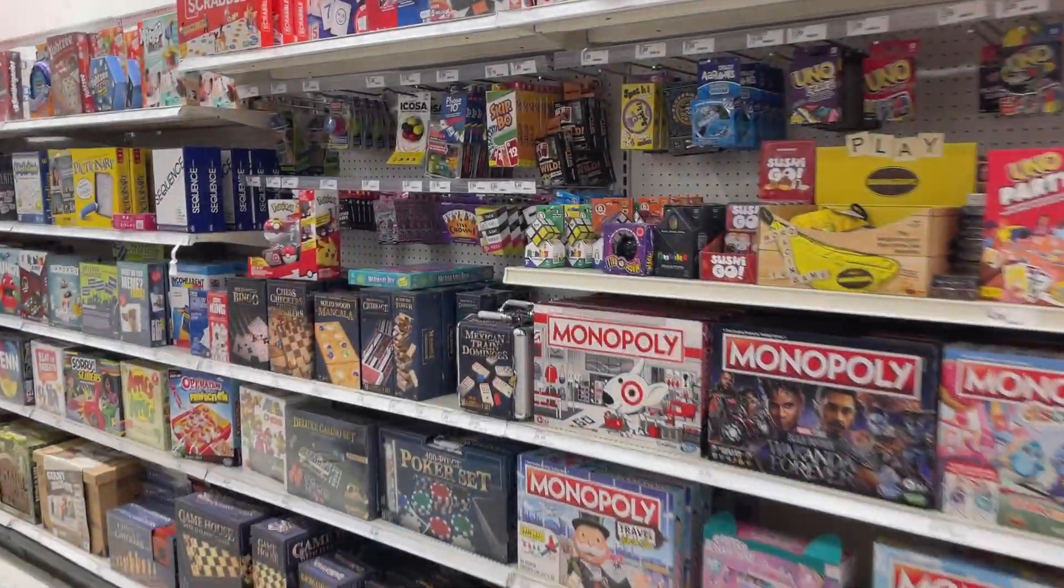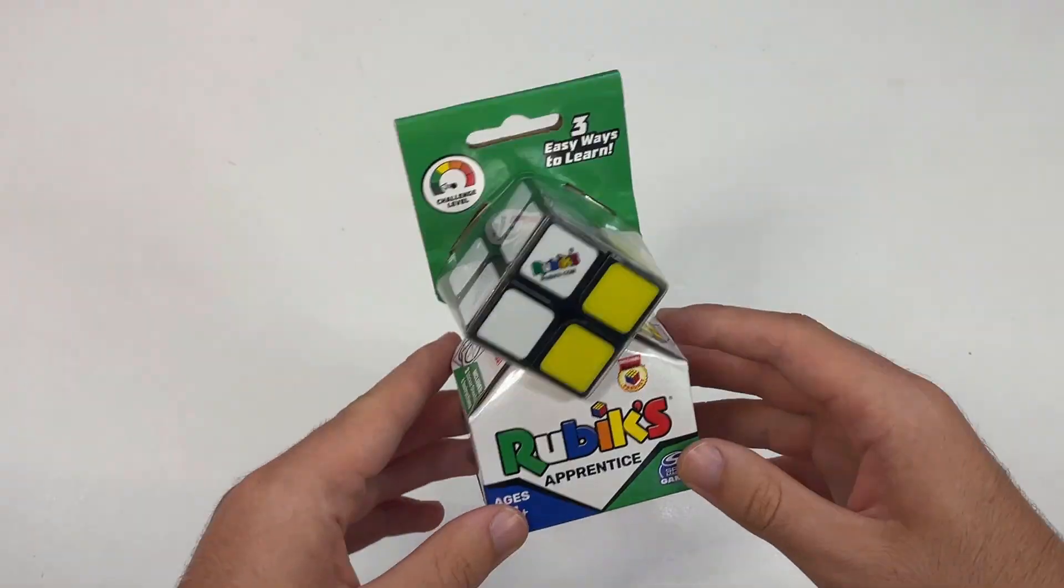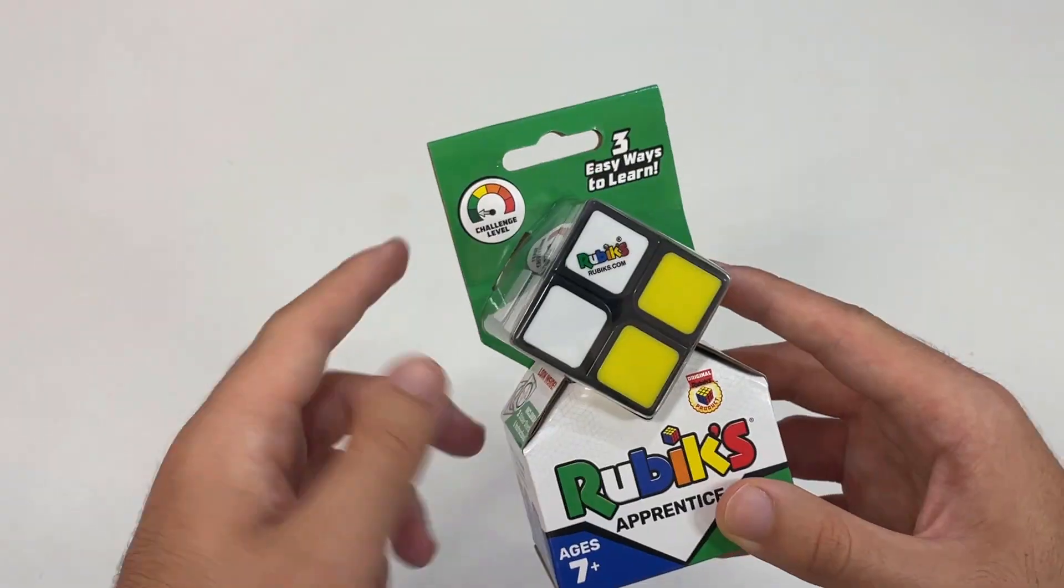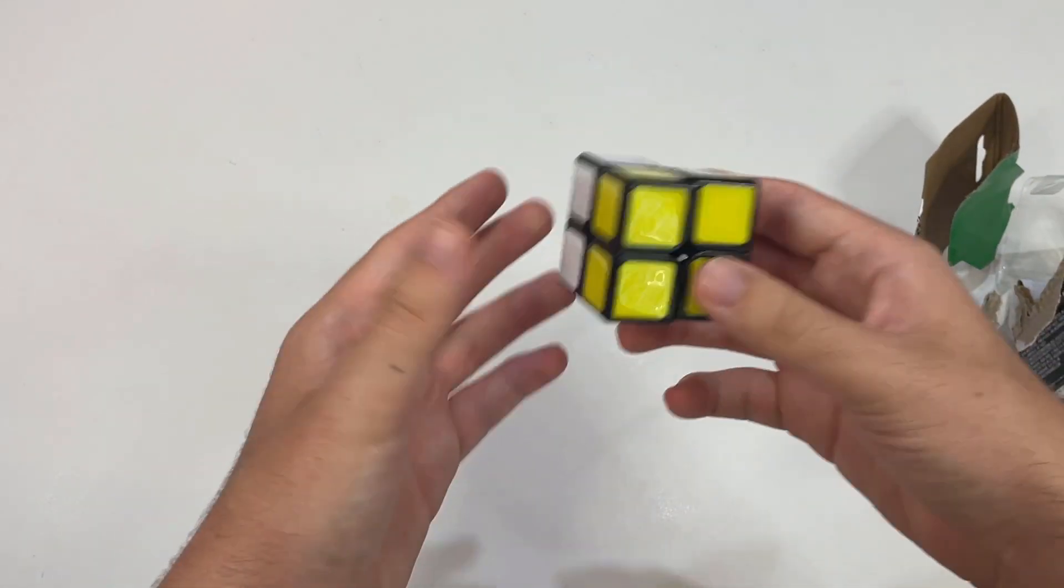One day at my local Target I saw a cube I had never seen before, the Rubik's Apprentice. It looked really easy so I had to get this cube. On the box it says the challenge level is the easiest it can possibly be. It's a really small 2x2.